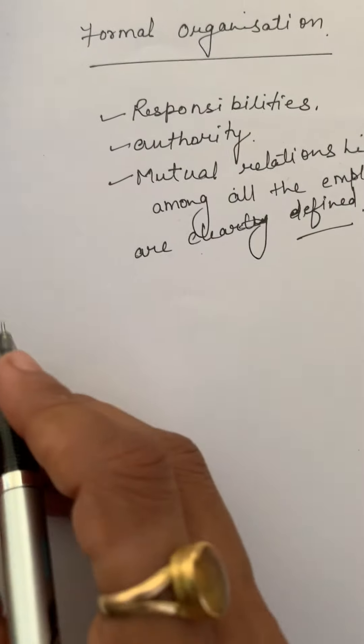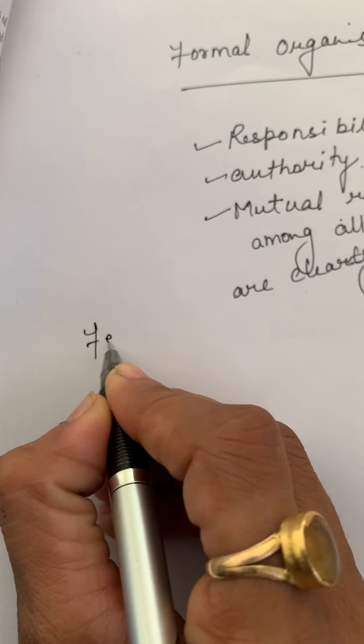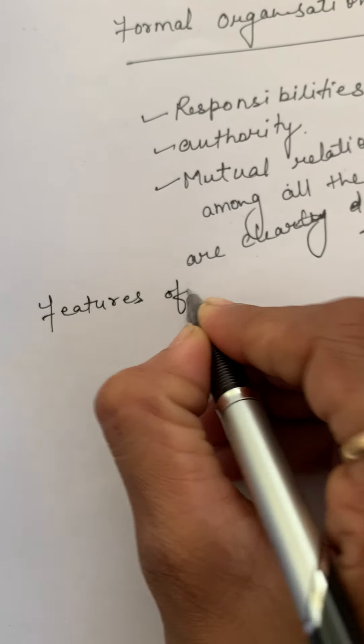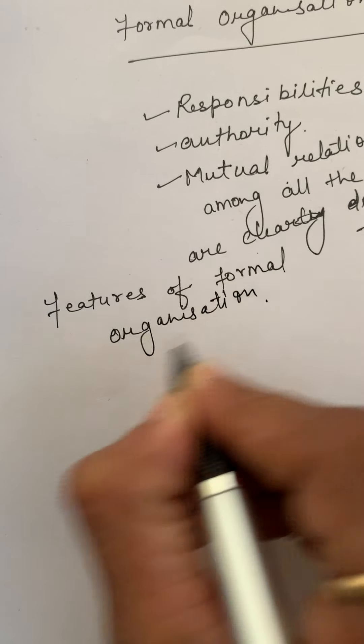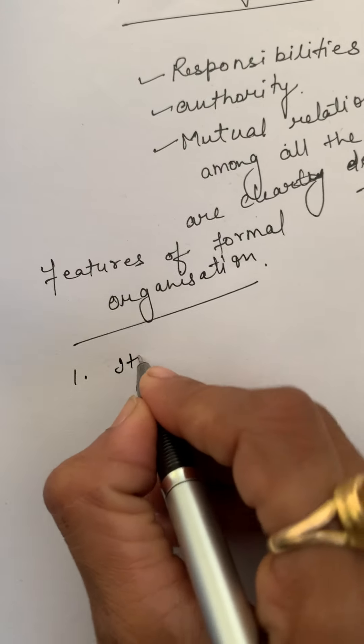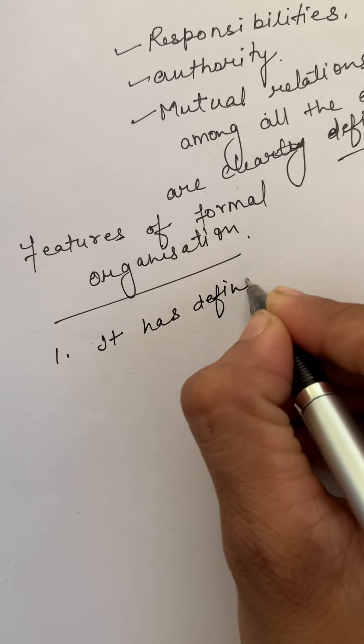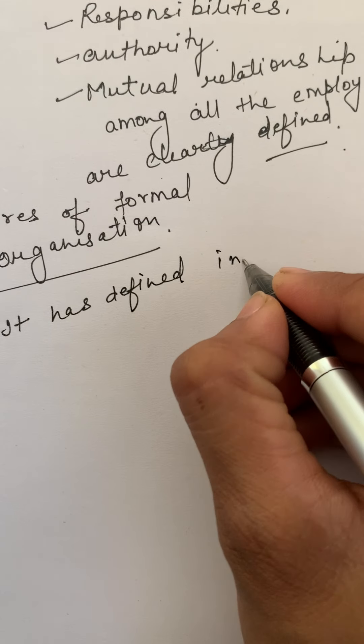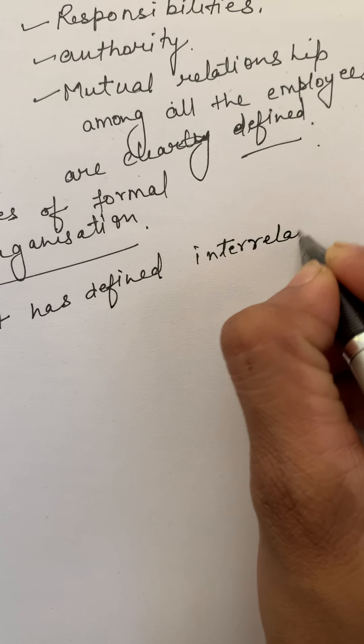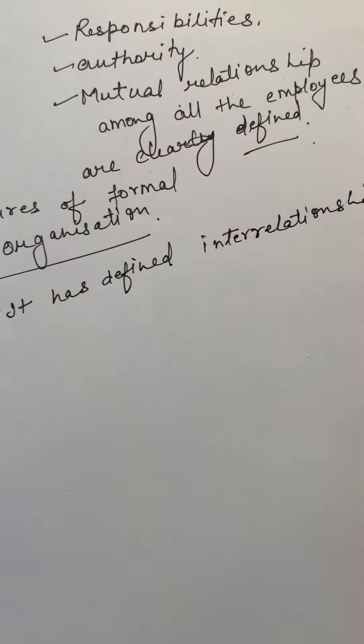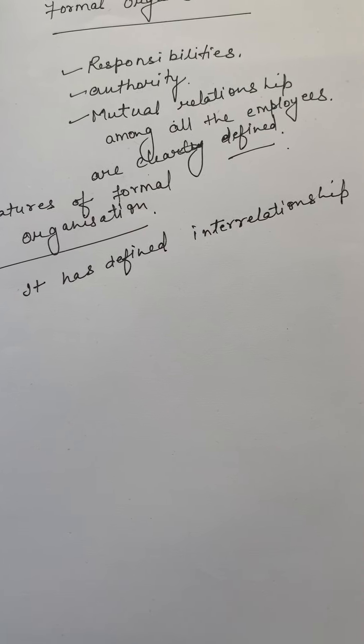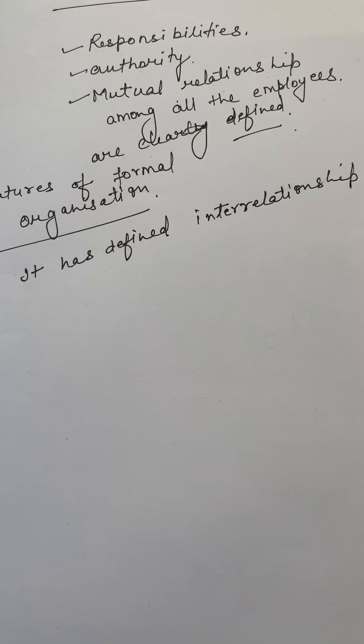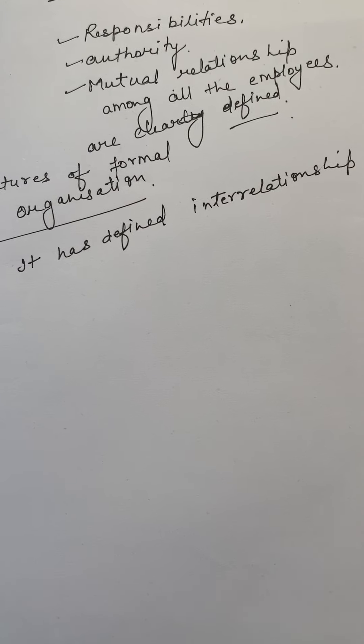First we come on the first point: what are the features of formal organization? First, it has defined structure. Which person has what relation with whom - these things are clearly defined.